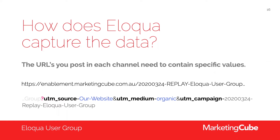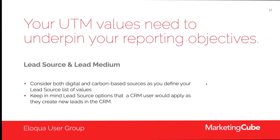If you're running events and sending one, two, or three invitations numbered accordingly, then when you look at the form submission data without even going to any reporting, you'll just see it right there — which email predominantly drove people to convert and register or download content. The UTM values you come up with really need to underpin your reporting objectives. It's best to start at your reporting objectives, understand your high-level reporting needs, and then build the reporting to suit.